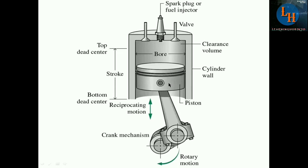Inside the cylinder there is a piston, which is also cylindrical. Then there is the ignition component — for an SI engine, a spark plug is used; for a diesel engine, a fuel injector is used. There are also two valves: one is the inlet valve and the second is the exhaust valve. There is also a clearance volume — when the piston is at the top dead center, there is a gap between the cylinder head and the piston top; that gap is the clearance volume.